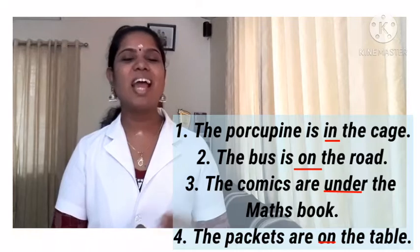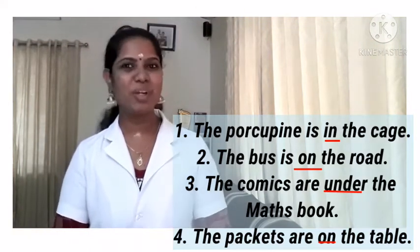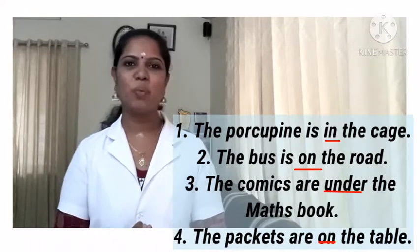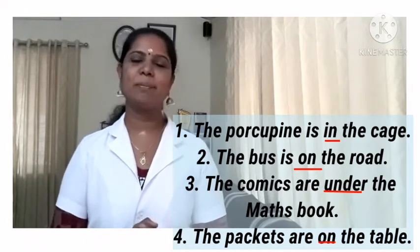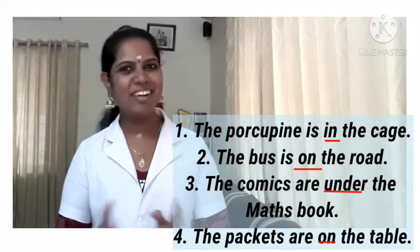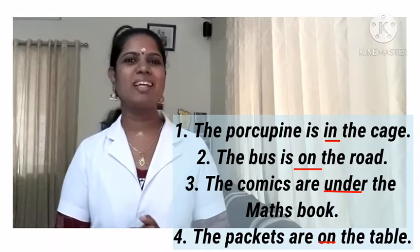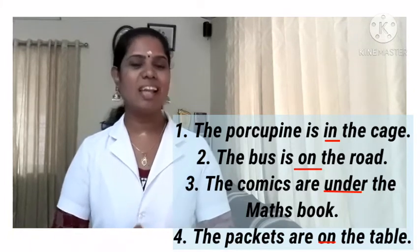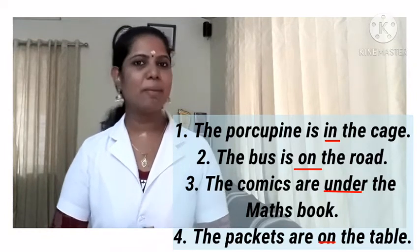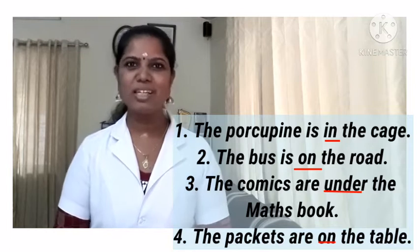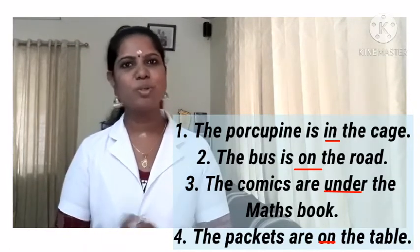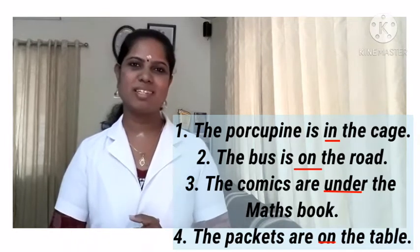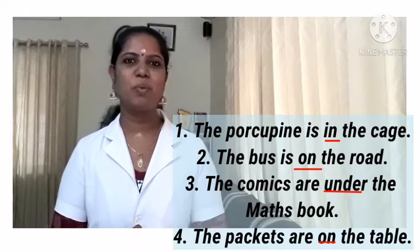These words have some function in these sentences. What are they actually doing? Here, 'on' brings a relationship between the two words — the packets and the table. Both are nouns. It tells us how these two words are related. For example, if I just say 'the packets, the table,' you get no meaning, and there's no relationship between them. So the word 'on' shows a relationship between these two words.